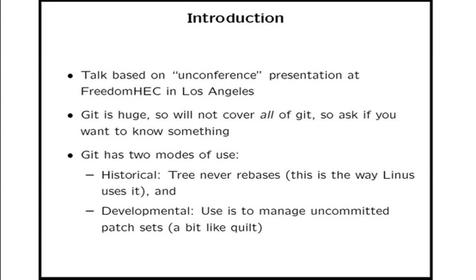One of the key things that you have to get correct in your mind when you use Git is that Git actually has two modes of use. I've listed them here as historical and developmental. The historical mode of Git is the way Linus uses Git, and it basically means his tree never rebases. So he never takes work he's done in Git and ports it to a new branch, swaps patches around, or does other stuff. He believes that once something is committed to his tree, it's an irrevocable part of history, and he can't destroy history by rewriting it.